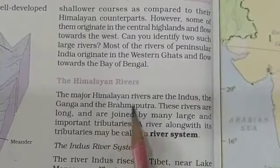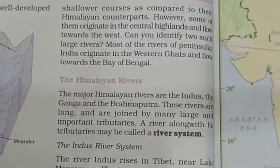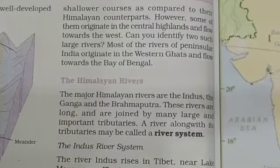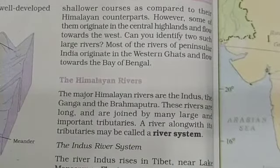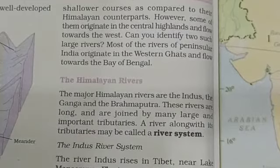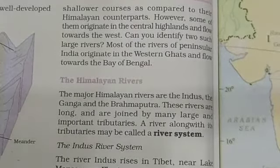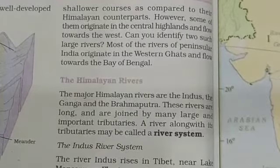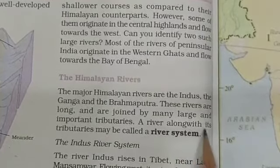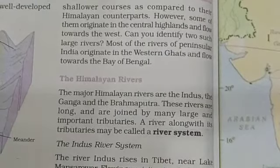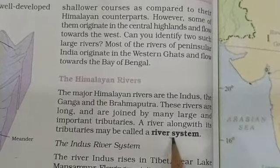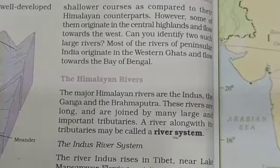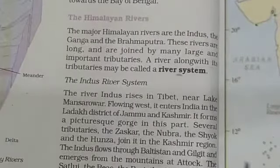These are the four drainage patterns. Now we will discuss the Himalaya rivers. The major Himalaya rivers are the Indus, the Ganga, and the Brahmaputra — these are the rivers that originate from the Himalayas. These rivers are long and are joined by many large and important tributaries. A river along with its tributaries may be called a river system.